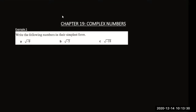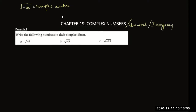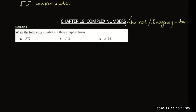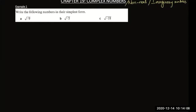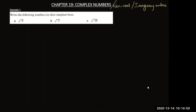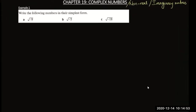Today's topic is complex numbers. Complex numbers are basically non-real numbers, also called imaginary numbers. We get them because they don't exist in the real world, but they are imagined. Complex numbers are real non-real imaginary numbers.